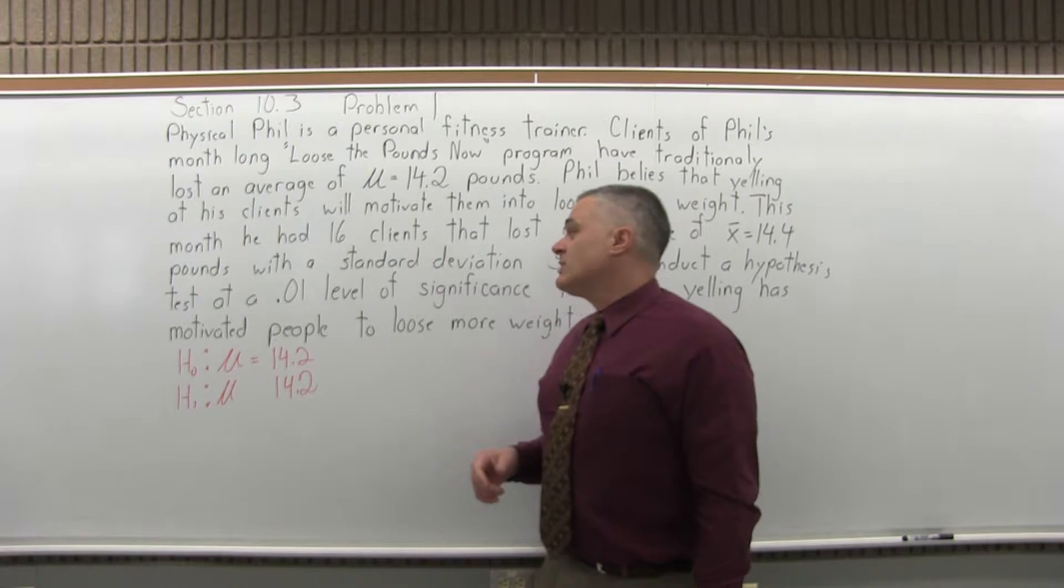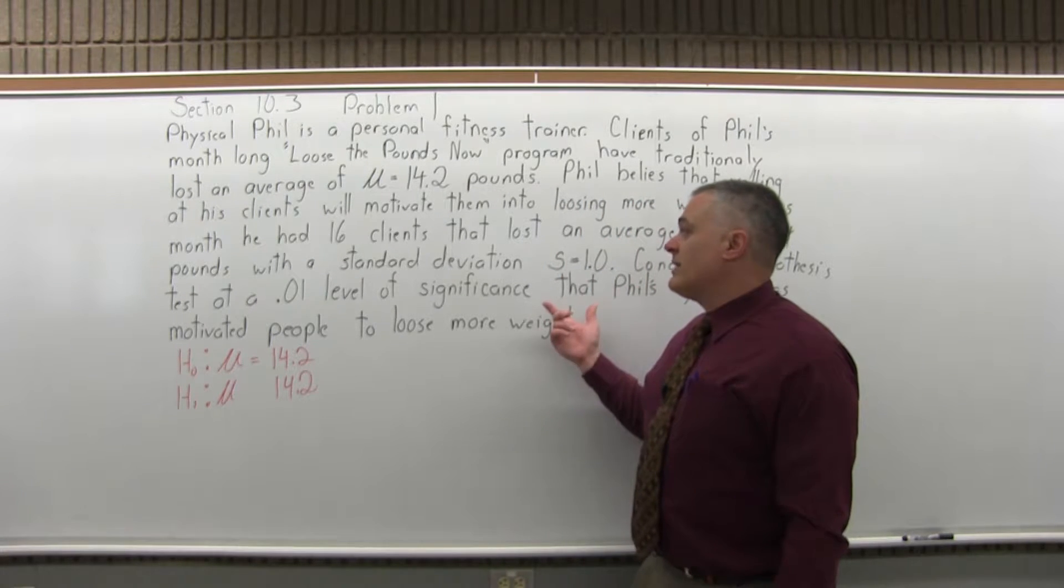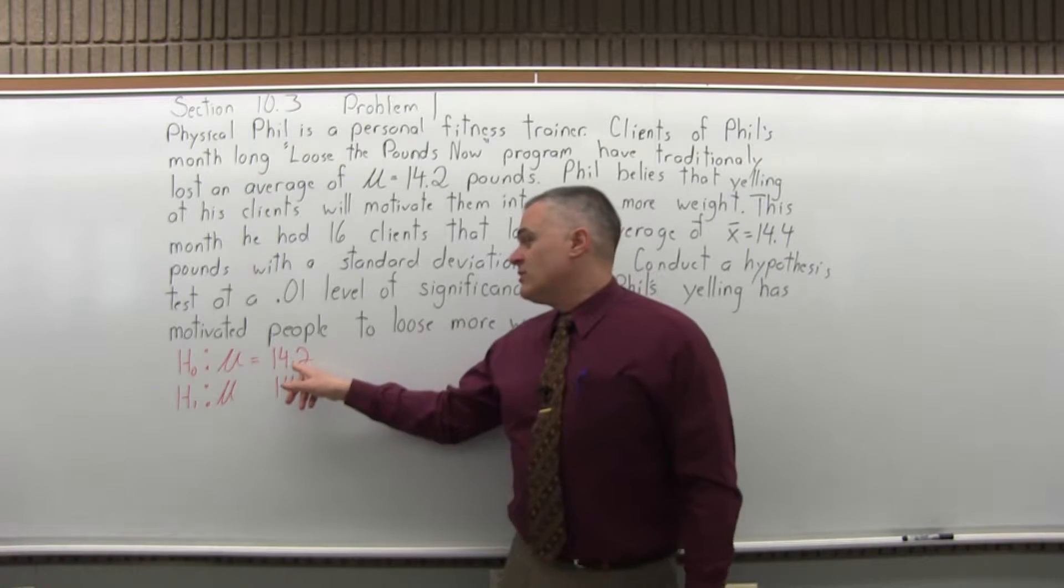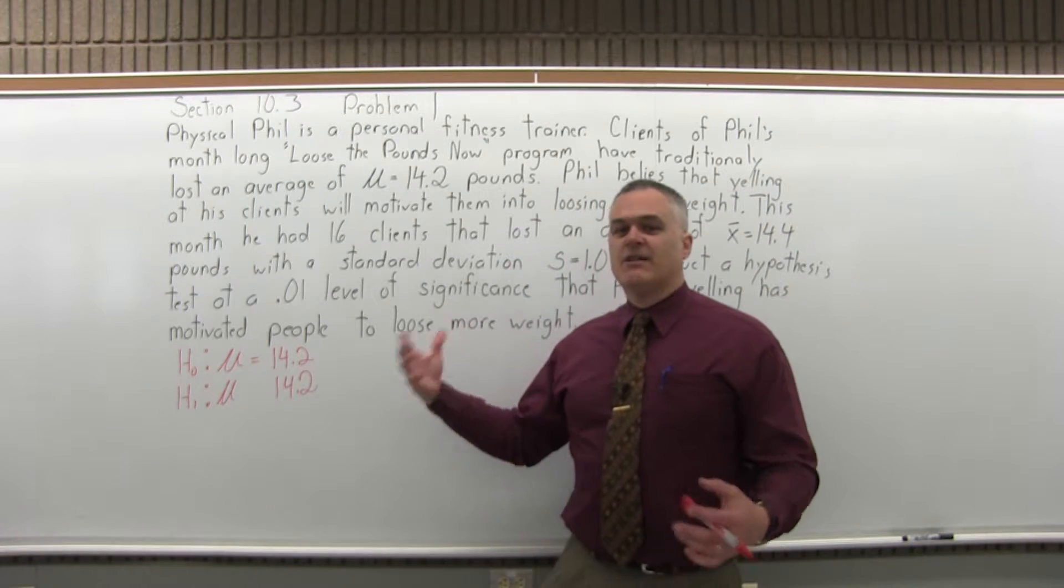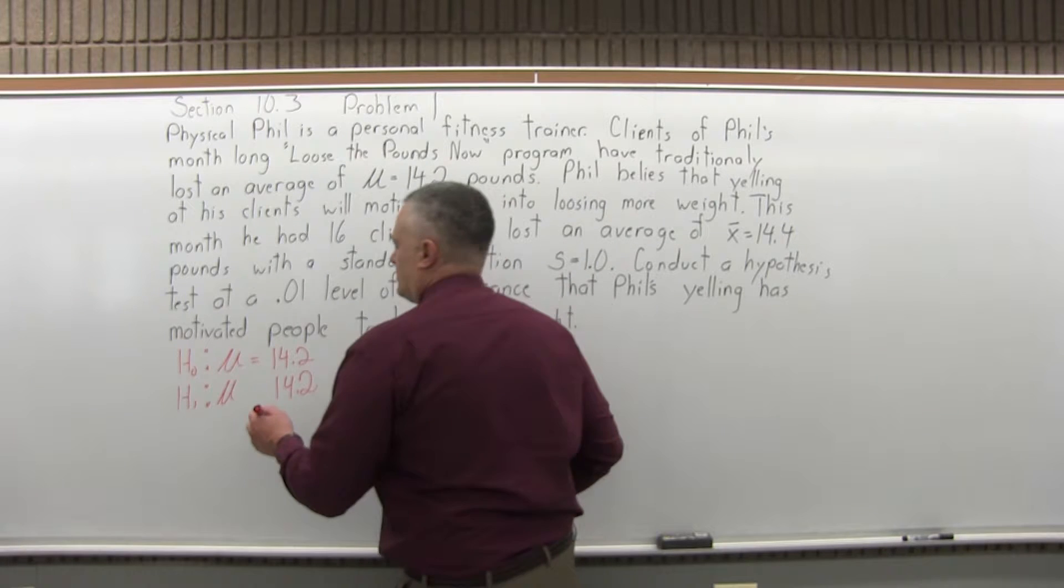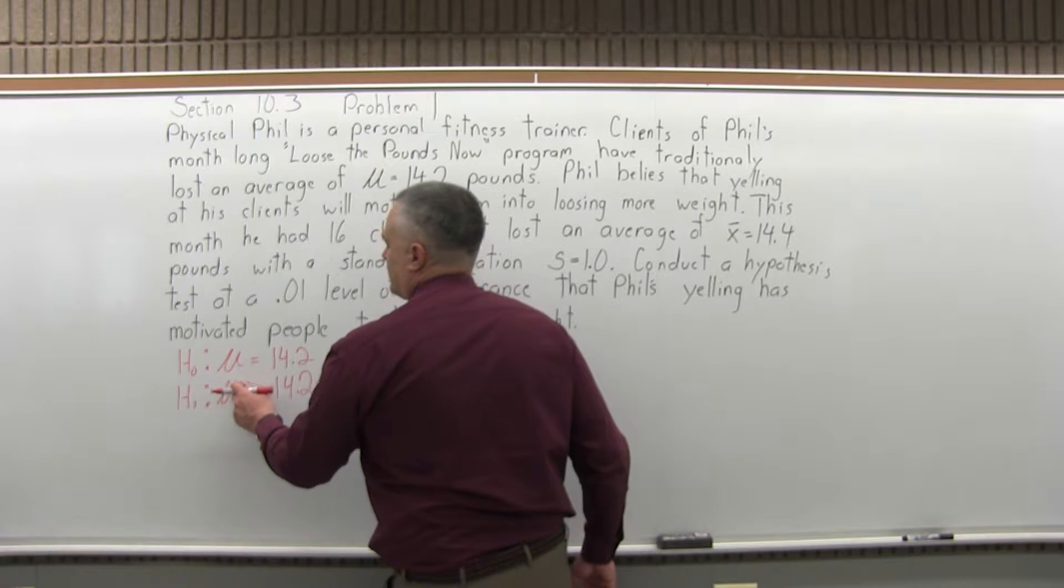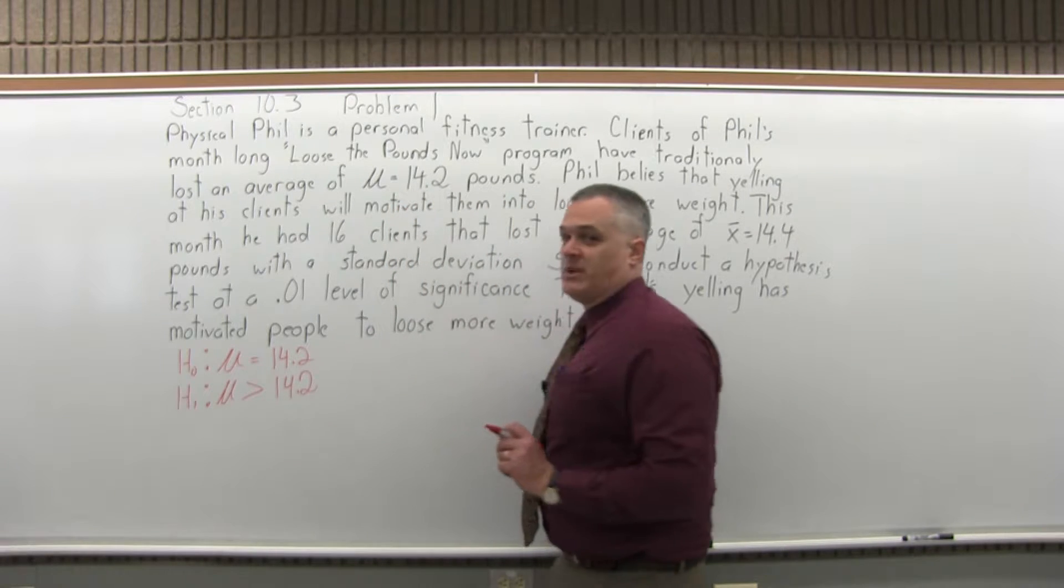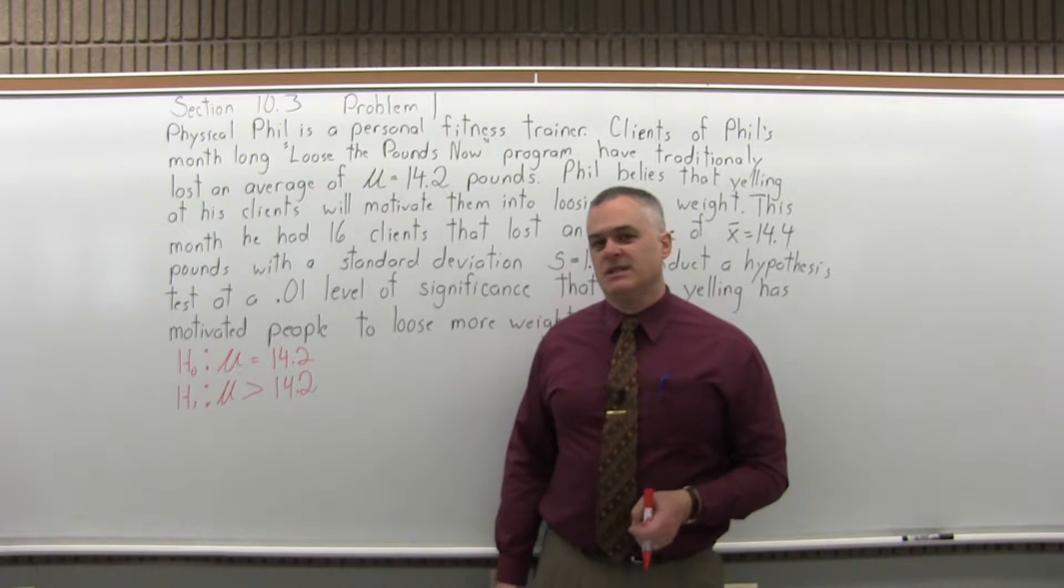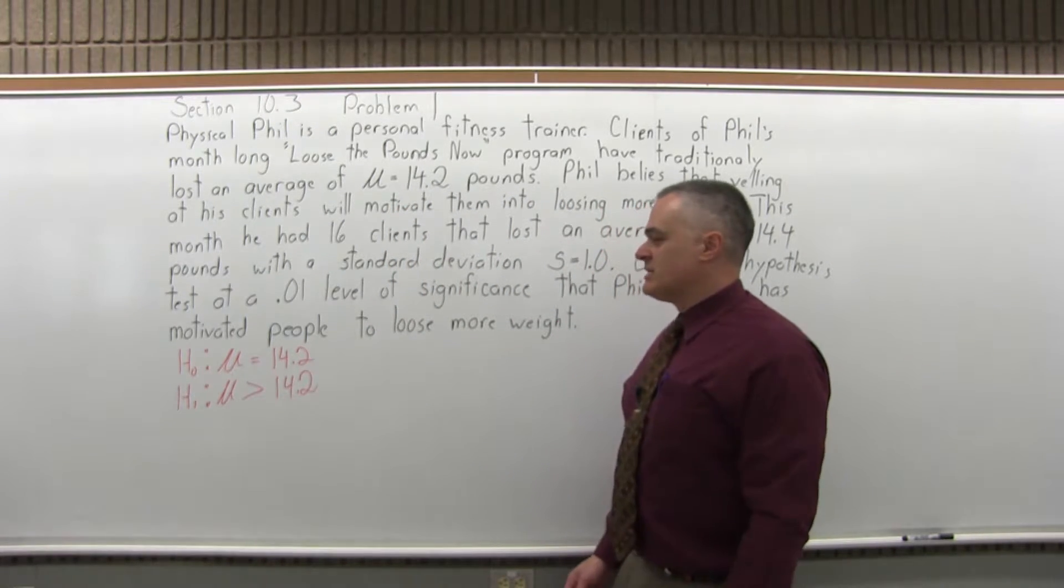So for this one, you want to see that the average amount of weight that Phil's clients lost is more than 14.2 pounds. He thinks yelling will make people lose more weight. So you want to test the claim that the average amount of weight lost is greater than 14.2 pounds, like maybe people lose 15 or 16 pounds in the month-long process.